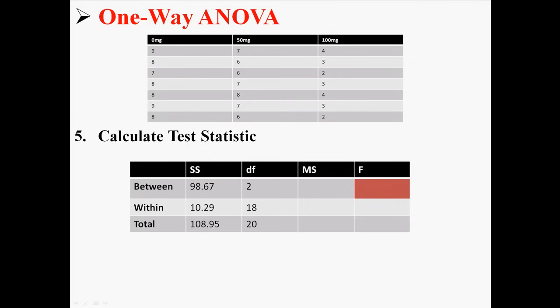Now we're actually almost done. We're very close to finding the f. Now the f, in order to find it, it's just ms between divided by ms within. That means mean square. So mean square between divided by mean square within. We just have to find those two things. And if we have those, we have f.